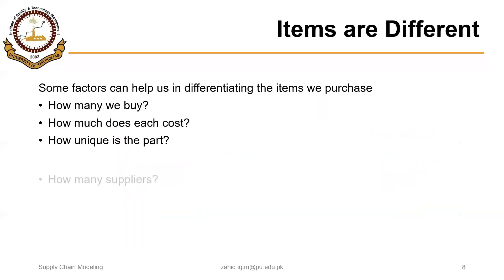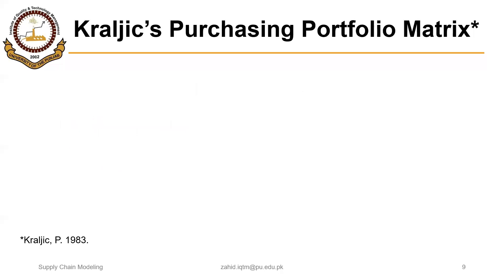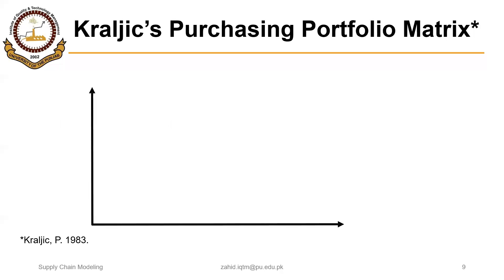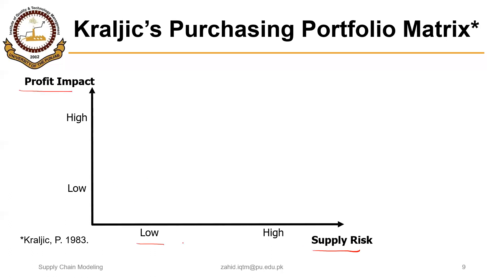Purchased items differ based on several factors: the quantity purchased, the cost, the uniqueness of the part, and availability — meaning how many suppliers are actually supplying the item. Peter Kraljic in 1983 proposed a matrix based on two factors: supply risk and profit impact. Both can be low or high, and based on these two factors, purchased items are categorized into four types.